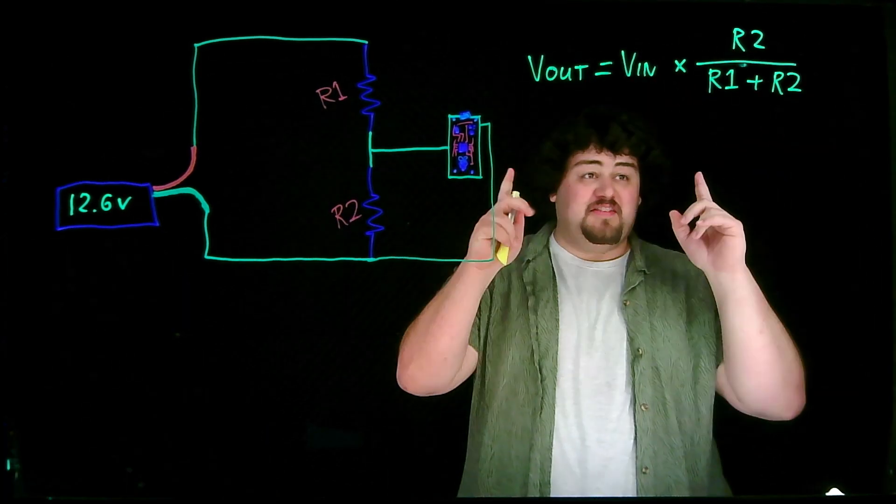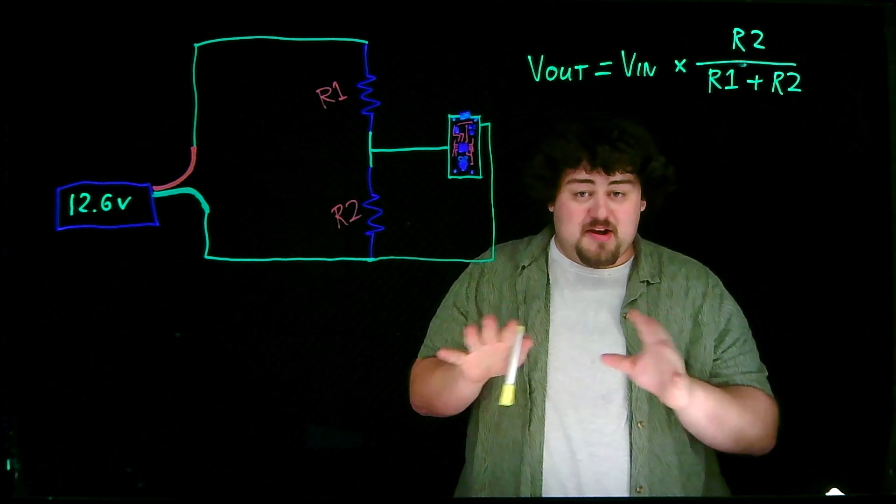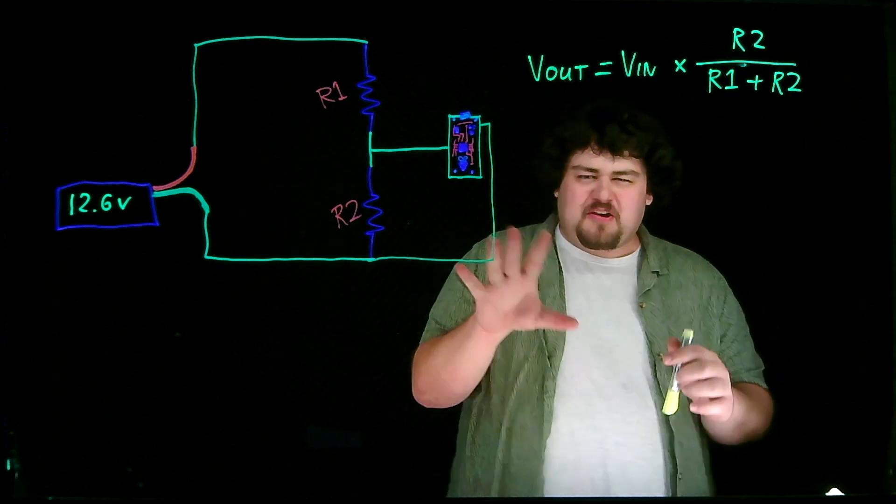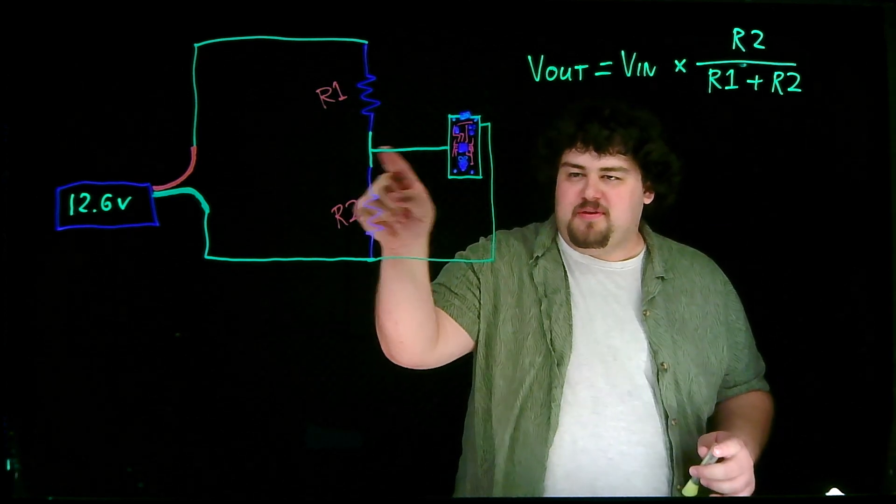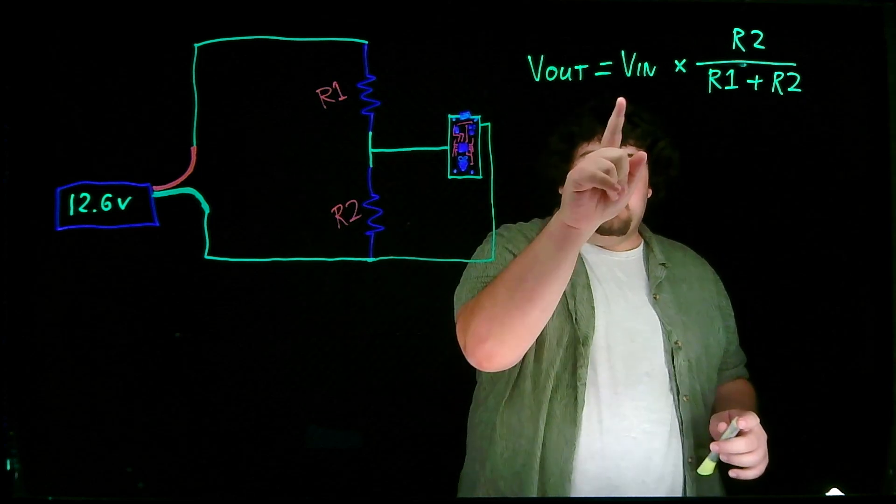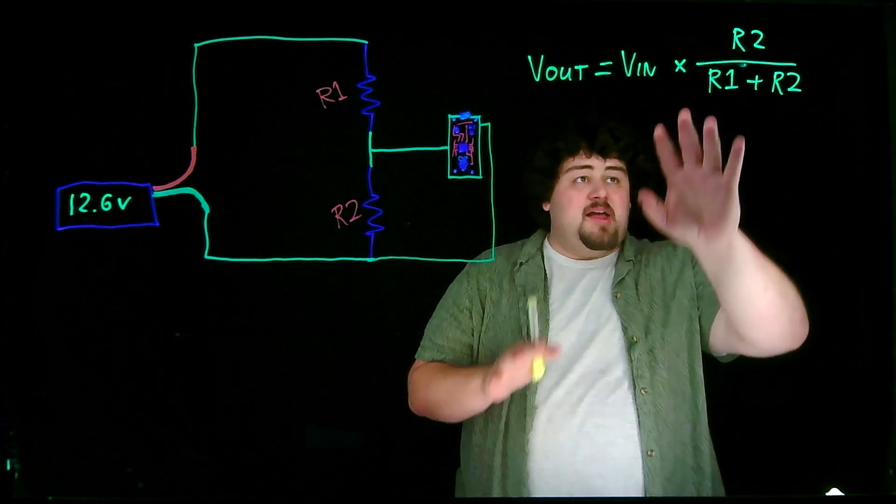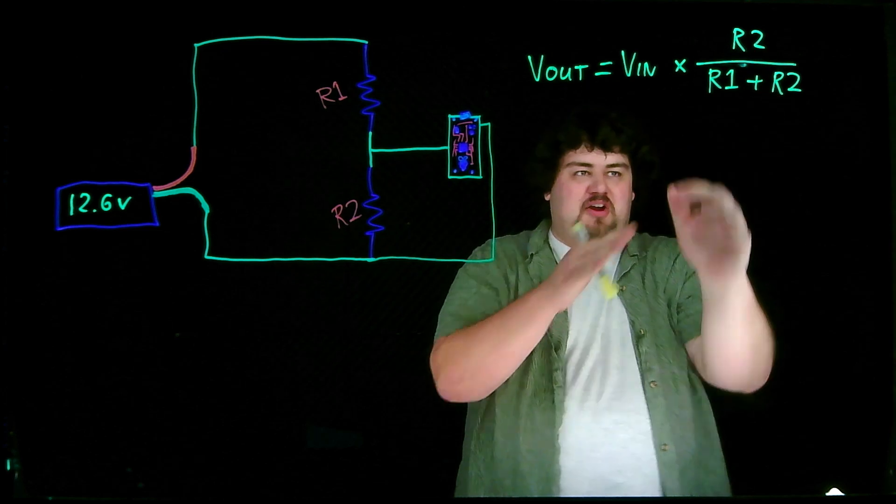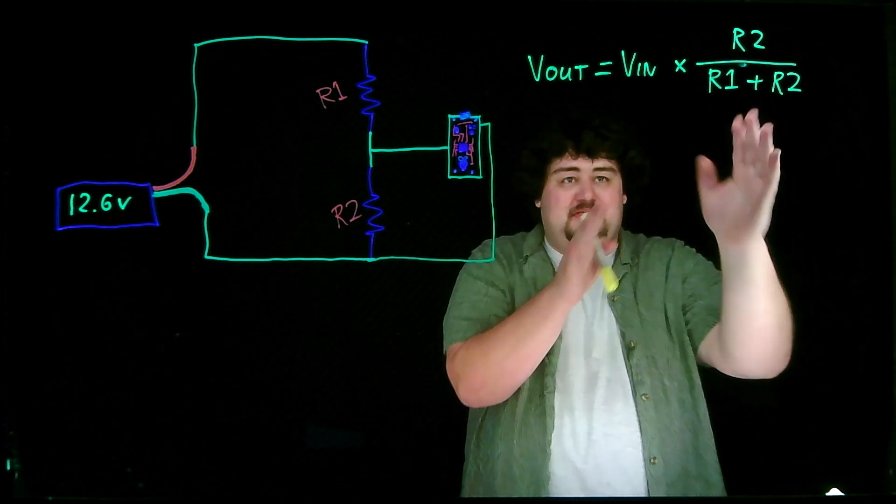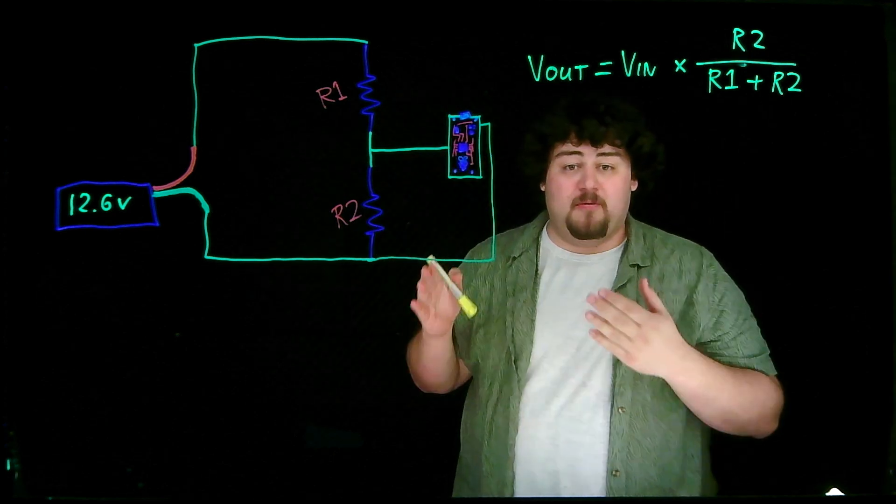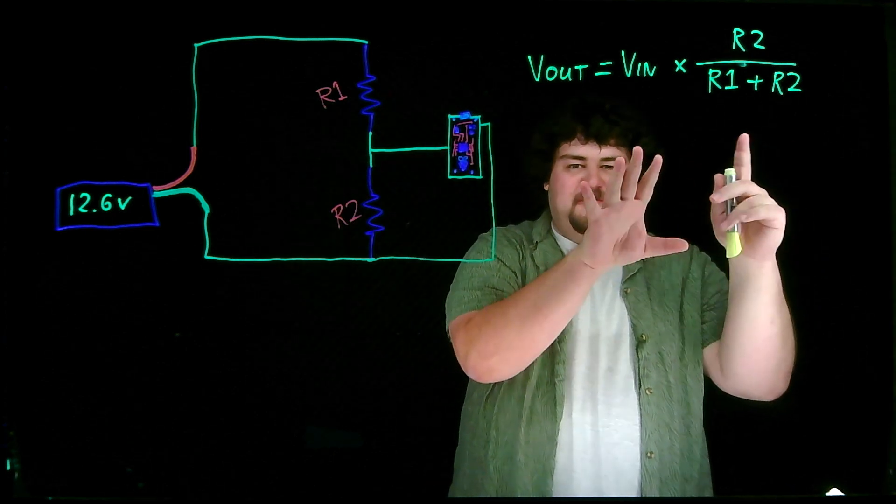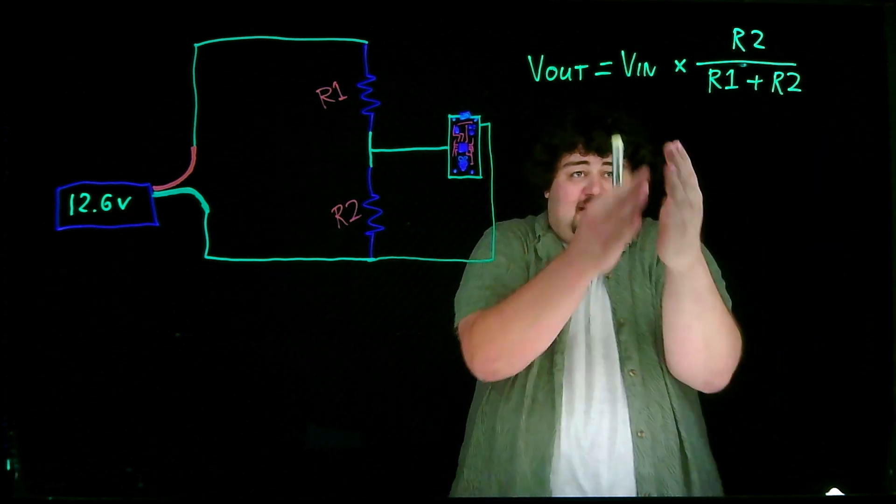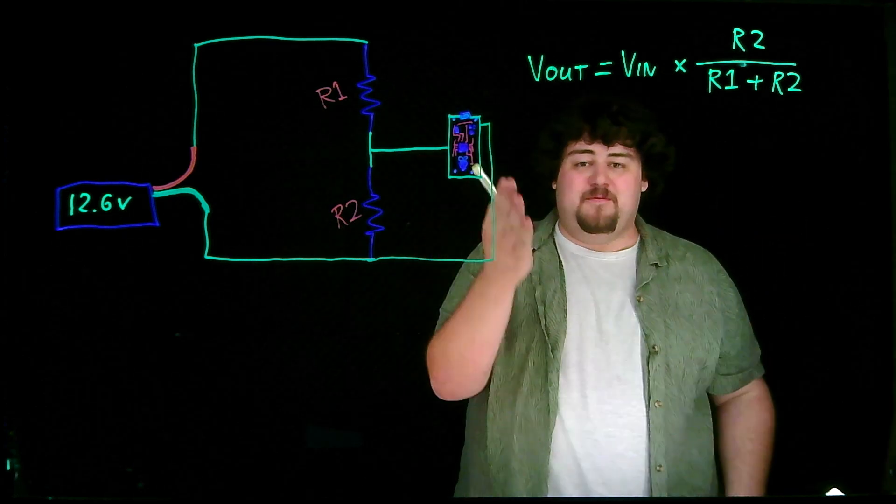Math jumpscare time. This is our voltage divider equation, and don't worry if your brain isn't built for math - we have a way to figure this out without any math whatsoever coming up. But all this equation is really saying is that the output voltage, Vout, equals the input voltage times R2 divided by R1 plus R2. So the values of R1 and R2 are creating this scaling factor, this multiplier that we multiply Vin by to get our output voltage. This is the core concept of a voltage divider: the ratio between R1 and R2 that we pick is how we choose to change and scale Vout as we need.